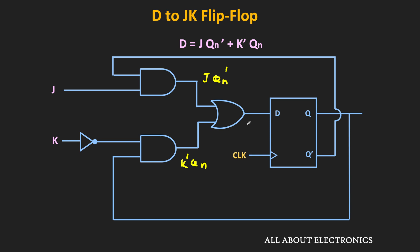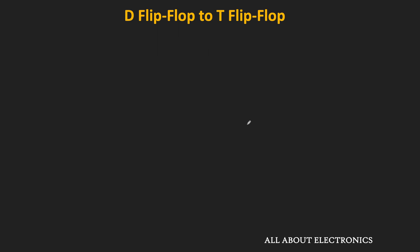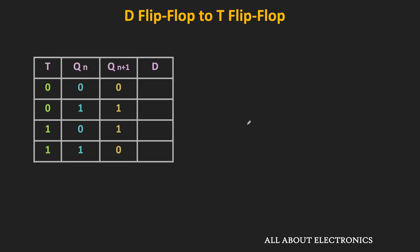Similarly, now let us see how to convert the D flip-flop into the T flip-flop. Since the T flip-flop is our required flip-flop, first of all let us write down its truth table. For the T flip-flop, when the input is equal to 0, the flip-flop will retain its current state. And whenever the T input is 1, the output of the flip-flop will toggle — if Qn is 0 it becomes 1, and if Qn is 1 it becomes 0.